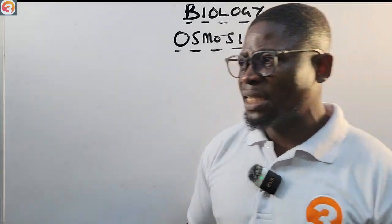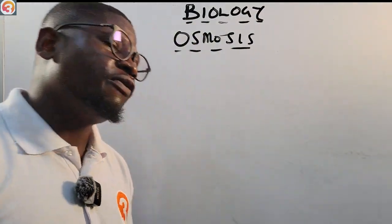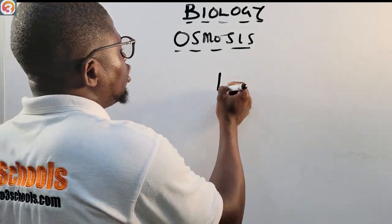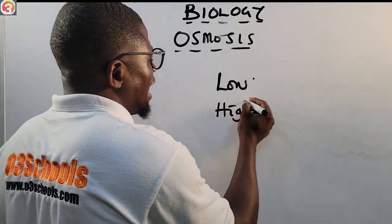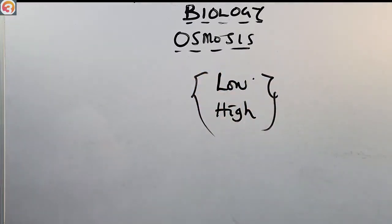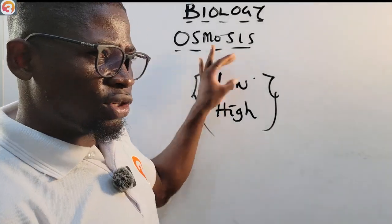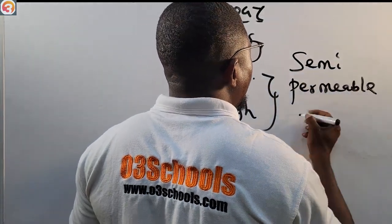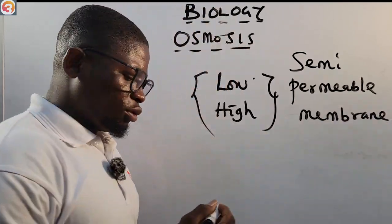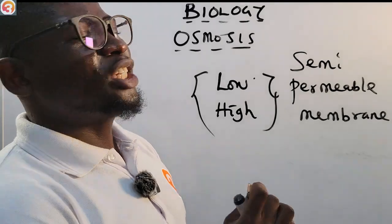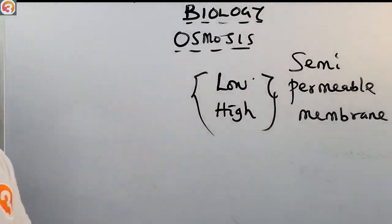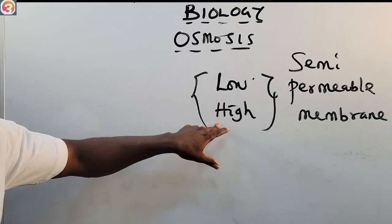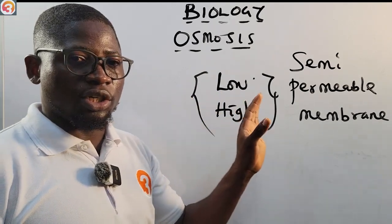When we talk about diffusion, we said diffusion is the movement of molecules from a region of high concentration to a region of low concentration. But osmosis is the reverse — the movement of water molecules from a region of low concentration to a region of high concentration through a semi-permeable membrane. That is osmosis: low to high, through a semi-permeable membrane.